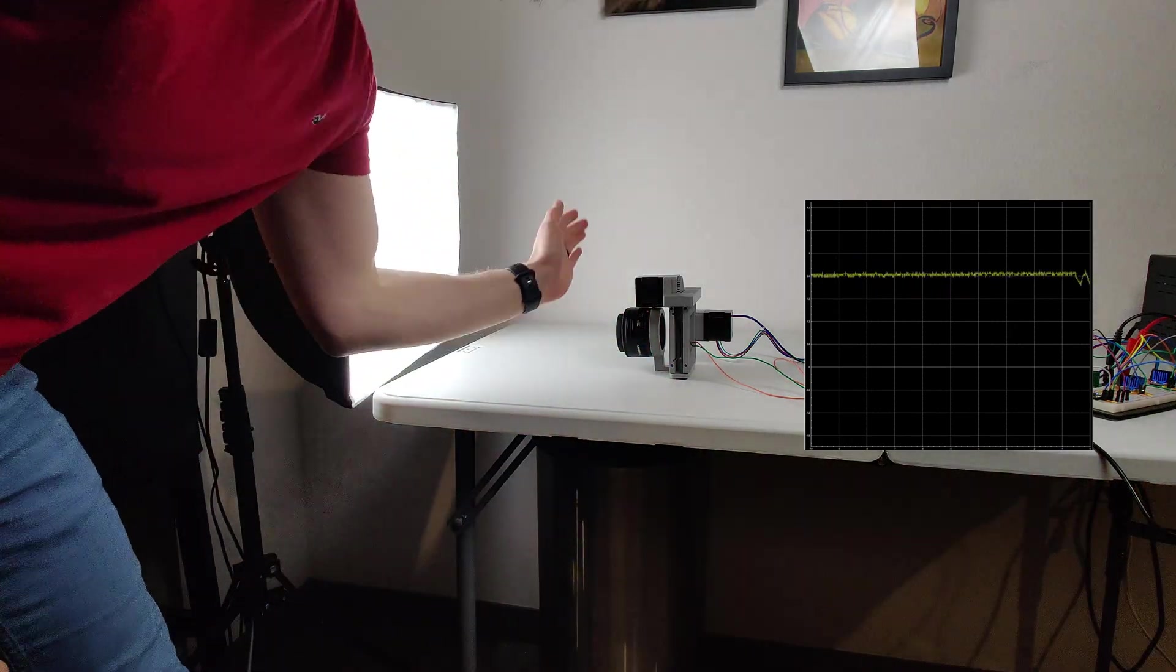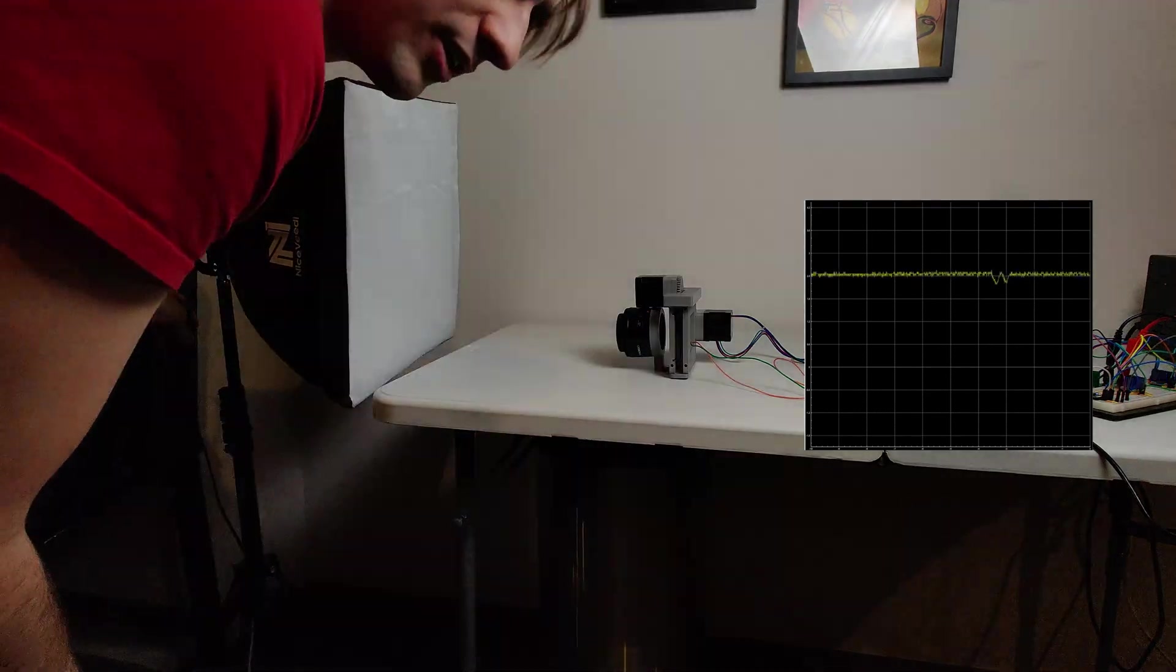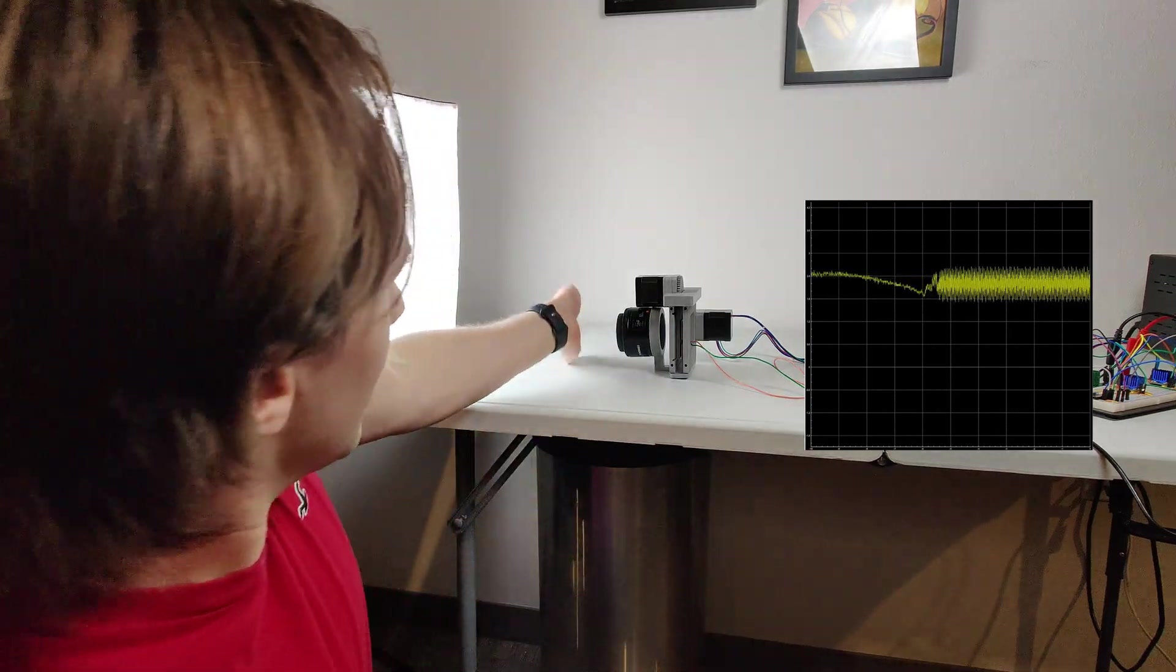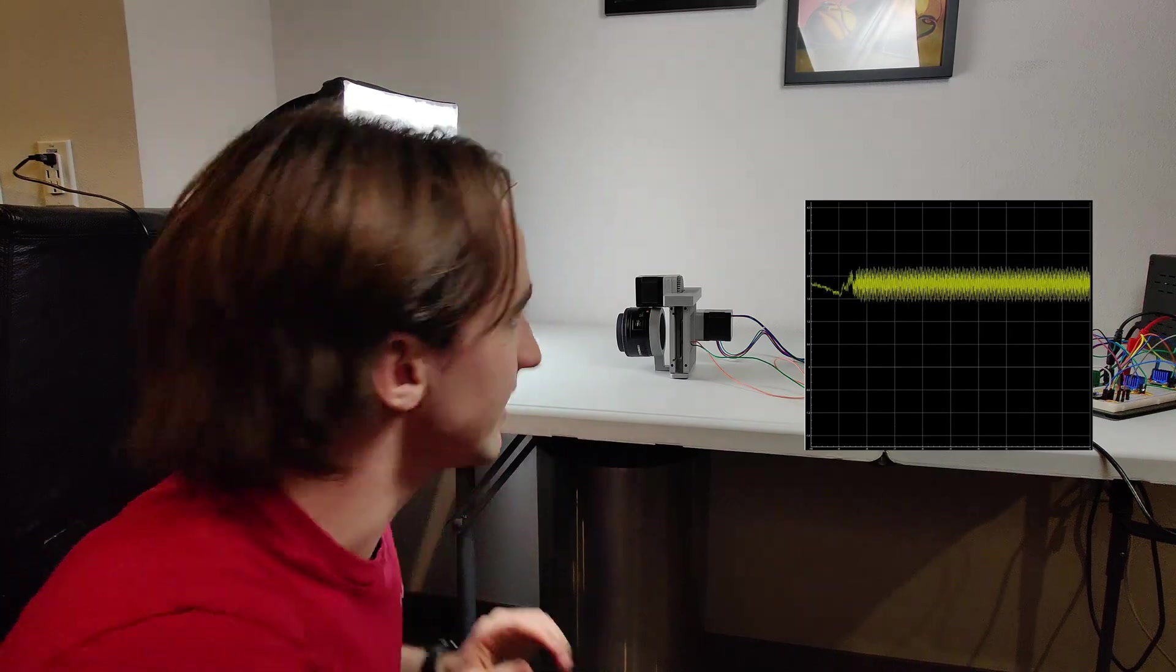I've hooked up an oscilloscope to the sensor so we can see exactly what the camera sees. Right now, you can see that if I move my hand in front of the sensor, or turn the light on or off, we see different voltages. But watch what happens when I turn on the stepper motors. Now, when I move my hand in front of it, or even turn the light off completely, you can see that there's almost no difference.